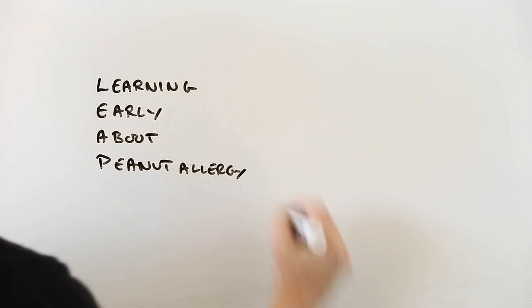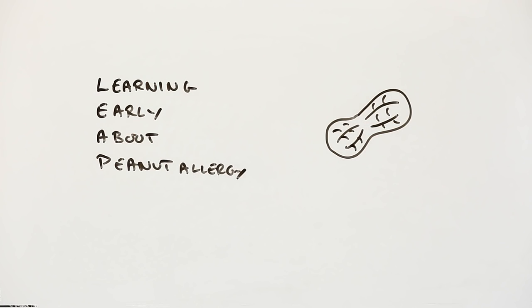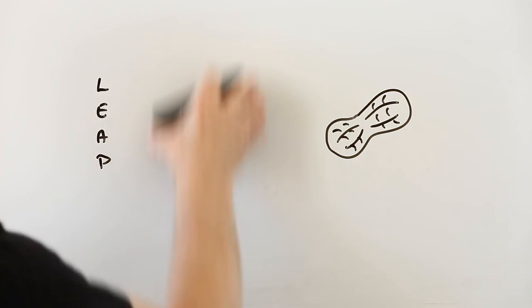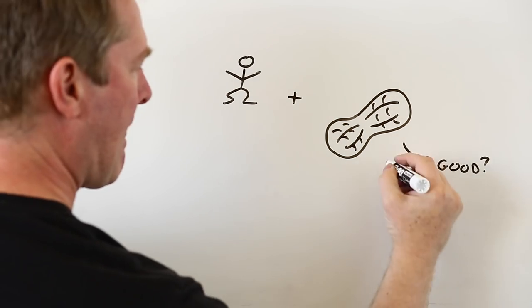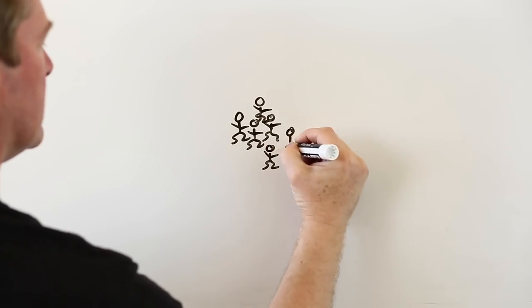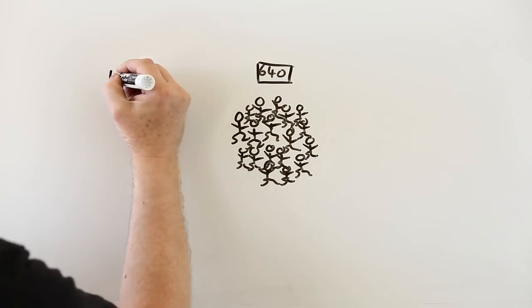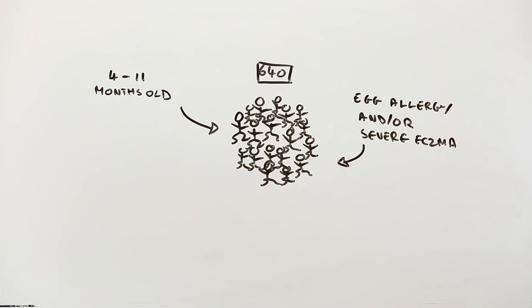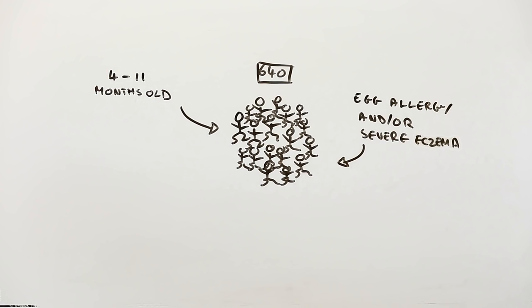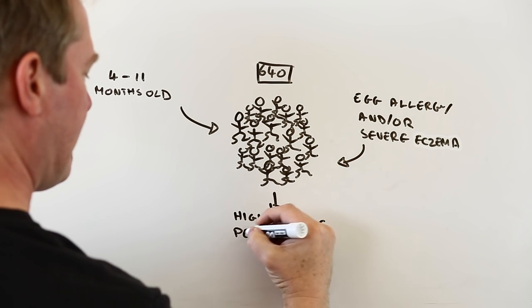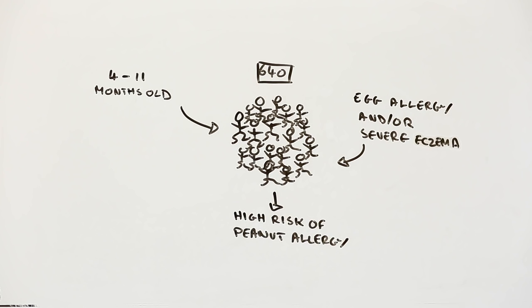The Learning Early About Peanut Allergy Trial, or LEAP for short, set out to measure the effect of exposing high-risk children to foods containing peanuts early on in their lives. They started out with 640 kids between the ages of 4 and 11 months who suffer from an egg allergy or severe eczema or both. They did this because these existing conditions suggest there's a reasonable chance of developing a peanut allergy as a child.